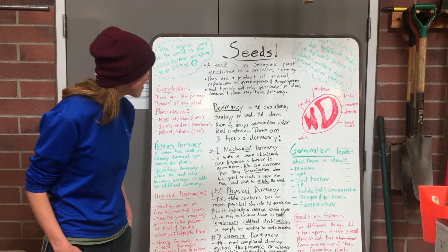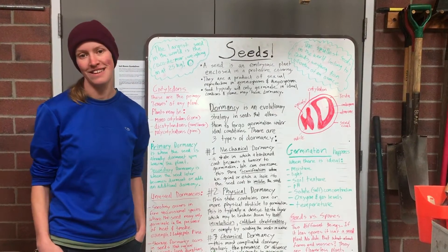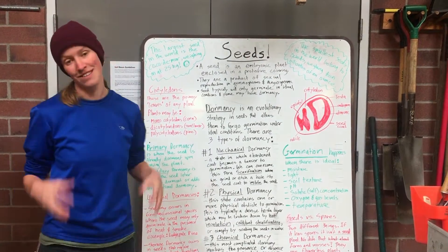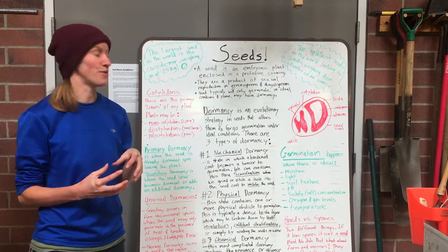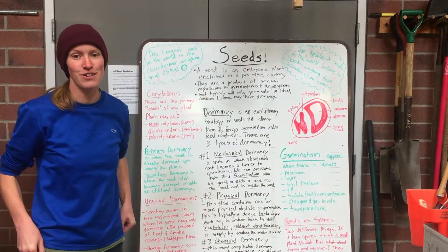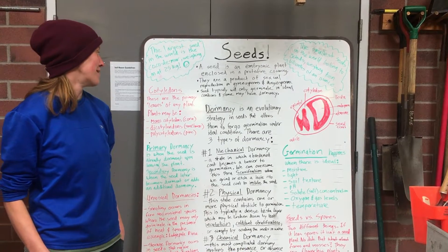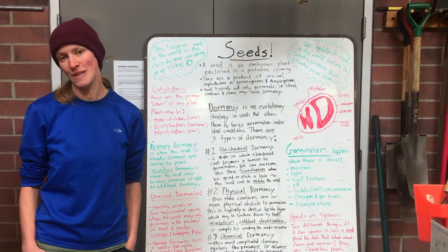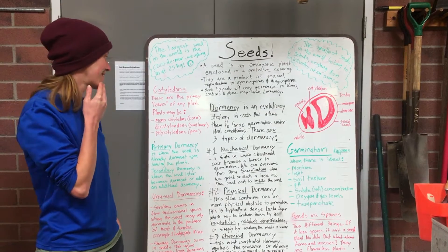As a brief description, a seed is an embryonic plant that is enclosed in a protective coat. They are a product of sexual reproduction in plants, and they typically only germinate under ideal conditions.